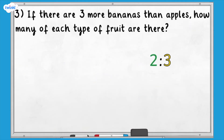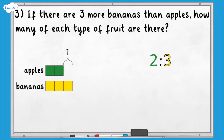Question three: if there are three more bananas than apples, how many of each type of fruit are there? For this type of question, we need to look at the difference between the numbers in the ratio because we are comparing them. We'll use a bar model to solve this problem. Using the numbers in the original ratio, we can see that the difference between them is one. We want the difference to be three. We can make the bars bigger, but we need to remember to keep the numbers of apples and bananas in proportion.